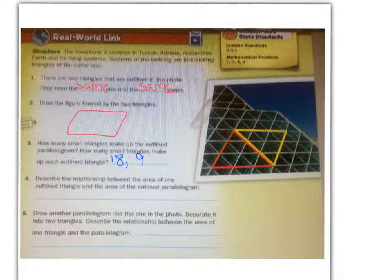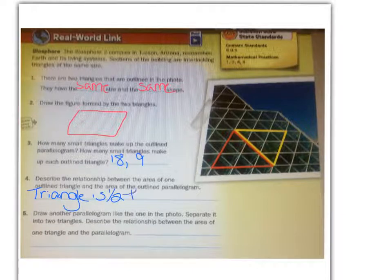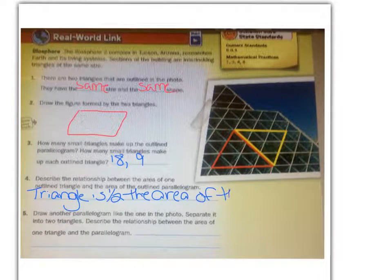Describe the relationship between the area of one outlined triangle and the area of the outlined parallelogram. Hopefully you can see that the area of one of the triangles is half of the area of the whole parallelogram because the whole parallelogram is 18 and the triangles are nine. So you can say the triangle is half the area of the parallelogram.